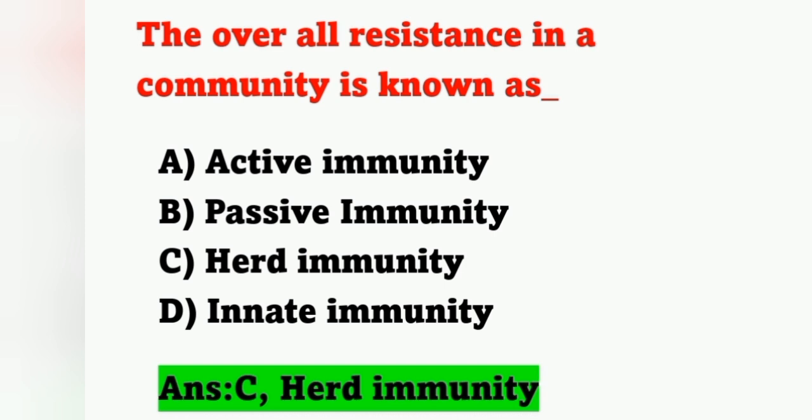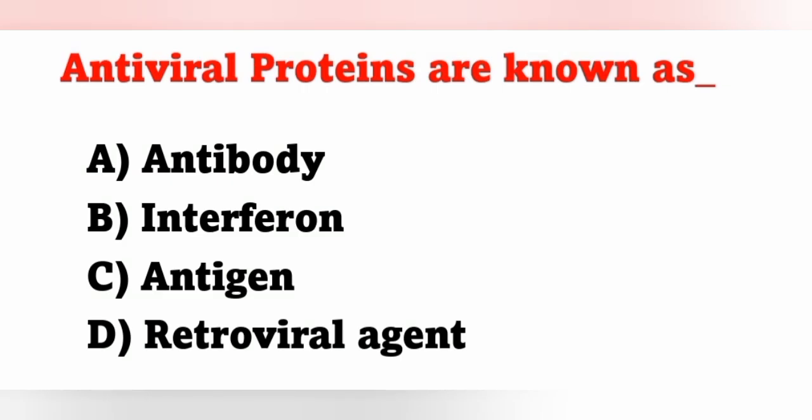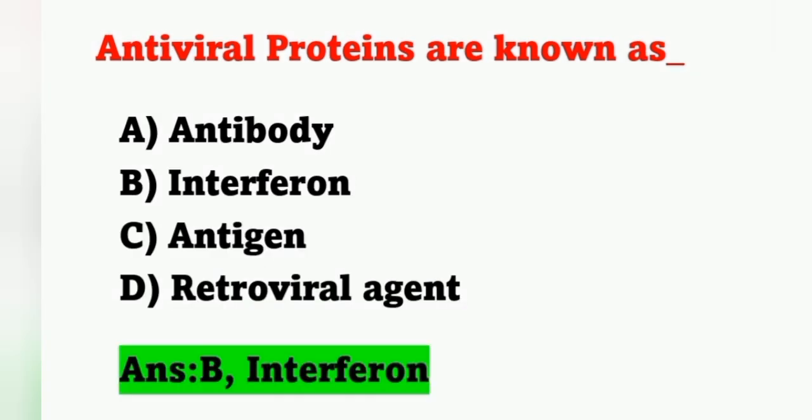Next question: antiviral proteins are known as — option A: antibody, option B: interferon, option C: antigen, option D: retroviral agent. Antiviral proteins are known as interferon. Option B is the correct answer.